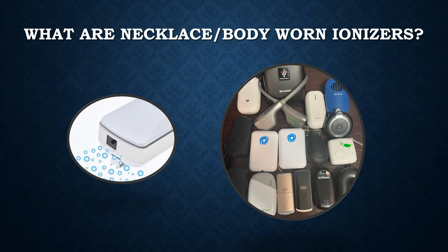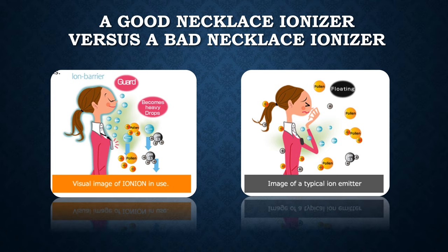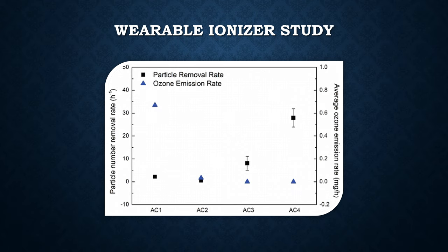What are necklace body-worn ionizers? They are miniature ionizers you wear somewhere on your body, usually as a necklace, and the ions emitted protect your breathing area. One issue is that sometimes the ions are weak and don't reach your breathing area, so certification is important to confirm the ions are actually there. A wearable ionizer study showed four ionizers with four completely different results — that's why certification matters. The AC4 Air Tamer model, for example, emits absolutely no ozone.